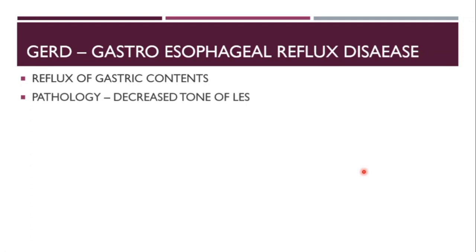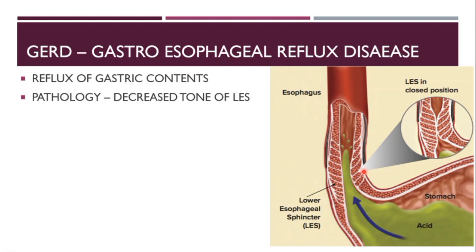The problem in GERD is a decrease in the tone of the lower esophageal sphincter, or LES. The LES is present at the lower part of the esophagus — it is a tight muscle-like structure which can close and open the pathway. Whenever food comes from the esophagus, this LES will open and allow the food to pass into the stomach.